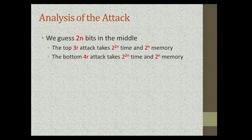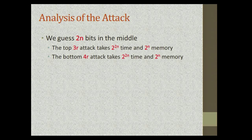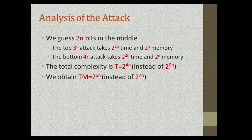In the analysis, the outer loop is iterated 2^(2n) times. For each iteration, the top three-round attack requires 2^(2n) time, and the bottom four-round attack also requires 2^(2n) time, so the total complexity is 2^(4n) instead of 2^(6n) from classical algorithms. We obtain a product of T and M equal to 2^(5n) instead of 2^(7n).